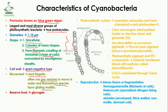The reserve food in cyanobacteria is glycogen, which is a polymer of alpha glucose. Their photosynthetic system resembles that of eukaryotes, and they have chlorophyll and photosystem 2.